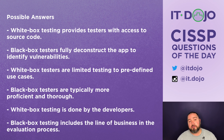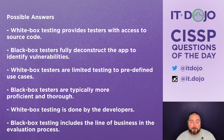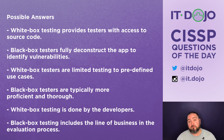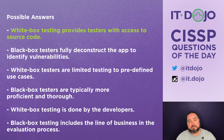Another benefit of white box testing is that it's much better at finding errors. Hidden errors that can't be identified through a user interface can be found by having access to the back-end code. A key disadvantage is that white box testing doesn't identify missing features — it only tests what's there, not what should be added. The best answer is that white box testers have access to the source code.